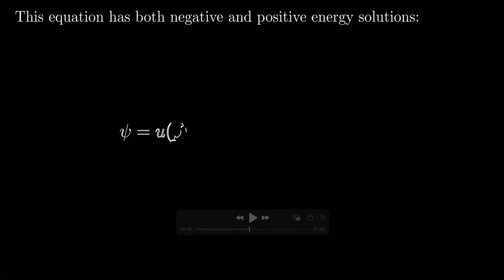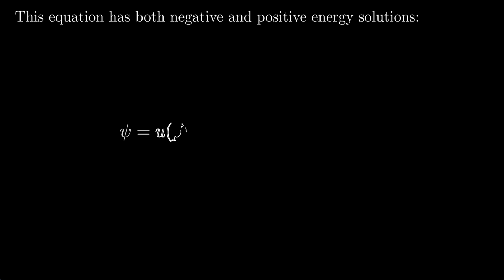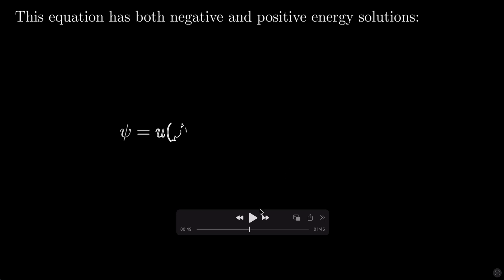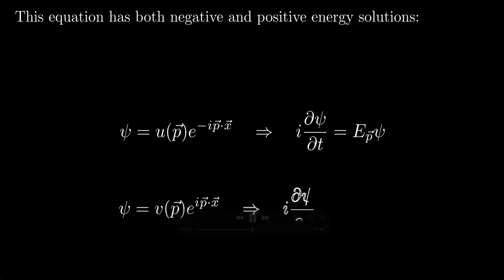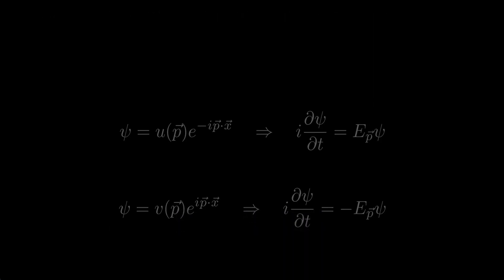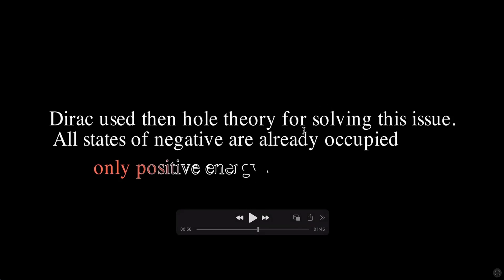When we solve the Dirac equation — a first-order linear equation — we get plane-wave solutions. There are two types: one with a positive energy eigenvalue, where the solution is u times a positive exponential, and another with a negative energy eigenvalue carrying the opposite sign. So the spectrum includes both infinitely positive and infinitely negative values, meaning the system has no ground state.